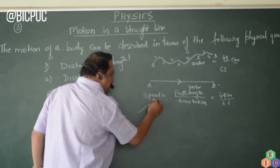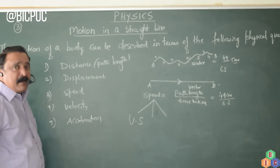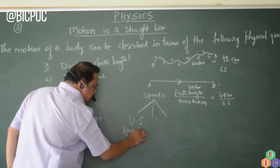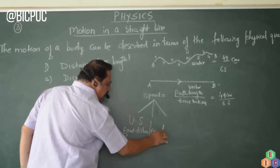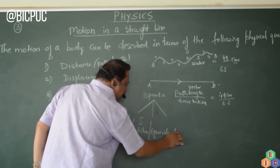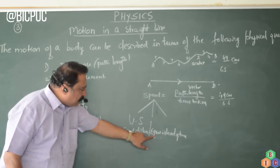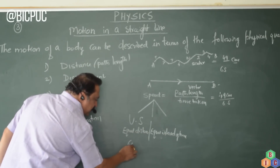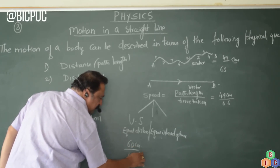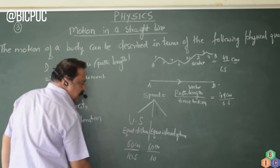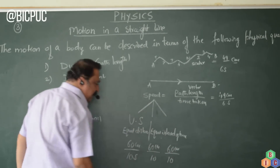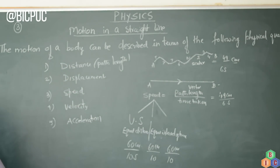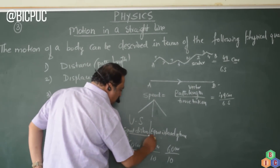There are different types of speed. One is uniform speed. Uniform speed means a particle covers equal distance in equal intervals of time. For example, it covers 60 centimeters in the first 10 seconds, 60 centimeters in the next 10 seconds, and 60 centimeters in the following 10 seconds — covering equal distances in equal intervals of time. That is uniform speed.